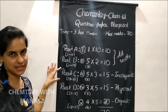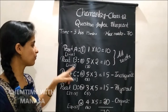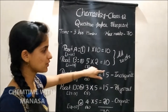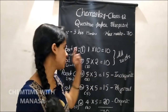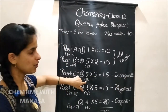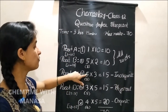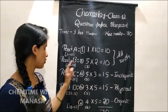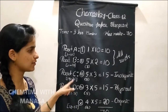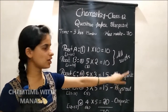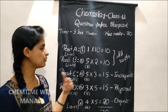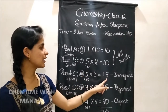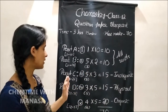Then Part C. Part C, or main question number 3, will contain totally 8 questions from the inorganic section. Out of 8, you have to answer 5 questions and each question carries 3 marks, from question number 19 to 26. You will get 15 marks from Part C.